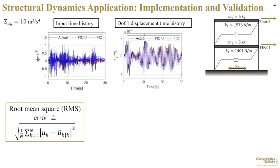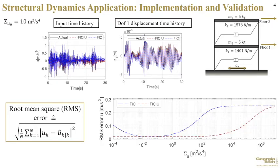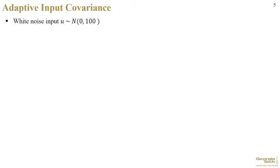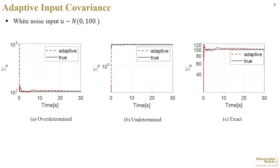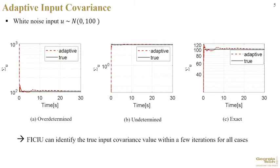To compare and quantify the accuracy of the estimators, we compute the root mean square error shown here. The estimators are initialized for different values of sigma_u, and the estimation is performed from each value. The RMS errors are then computed using the entire estimated time history. The figure shows that the FICIU estimator can achieve a smaller RMS error for a larger range of initialized values. Finally, for a white noise input with constant covariance value, we visualize the adaptive input covariance updated by the FICIU for three cases: one where the predefined input covariance value is overdetermined, one where it is underdetermined, and one where it is exact. It can be seen that the FICIU can identify the true input covariance values within a few iterations only for all cases.